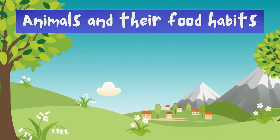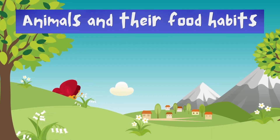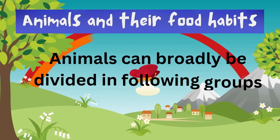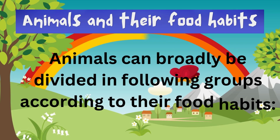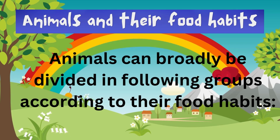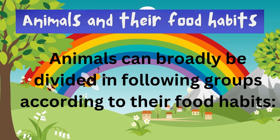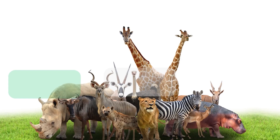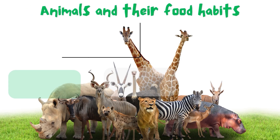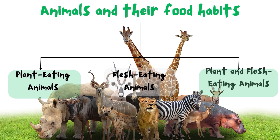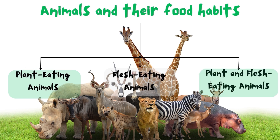Animals and their food habits. Animals can broadly be divided into the following groups according to their food habits: plant-eating animals, animal flesh-eating animals, and plant and flesh-eating animals.